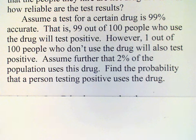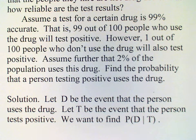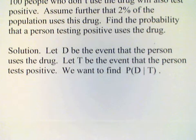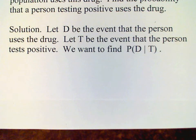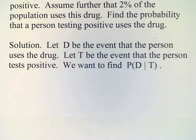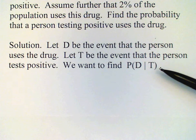The problem is to find the probability that a person who tests positive actually uses the drug. We'll start with a let statement: let D be the event that the person uses the drug, and let T be the event that the person tests positive. Of course, these are two different things. What we want is the conditional probability that the person actually uses the drug, given that the test is positive.